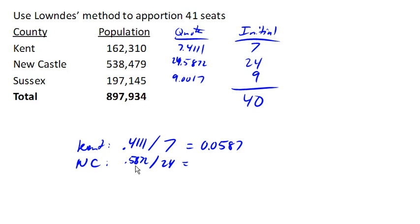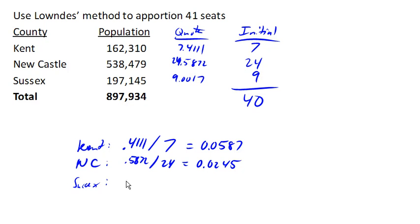Even though Newcastle's decimal part was the largest, they're also the largest county, so when we divide it, it makes that number much smaller. Sussex is about the same size as — or only slightly larger than — Kent, but because the decimal part is so much smaller, this ratio ends up much, much smaller.